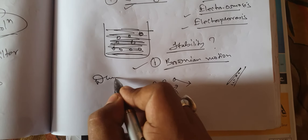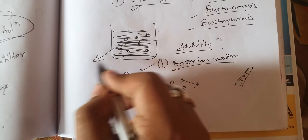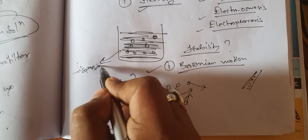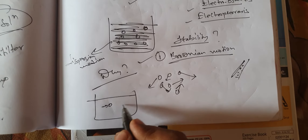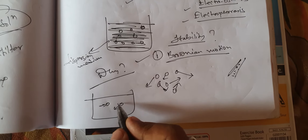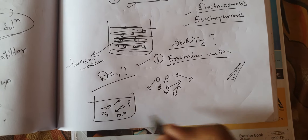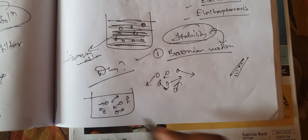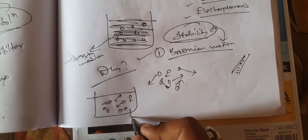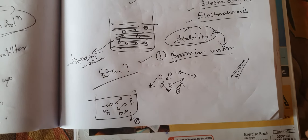Why does Brownian motion exist? Brownian motion exists because the particles of the dispersion medium strike the particles of the dispersed phase, causing them to move in random directions. Why does Brownian motion cause stability? Because due to Brownian motion, the effect of gravity is nullified and the particles don't precipitate down easily. That is the first reason for stability.